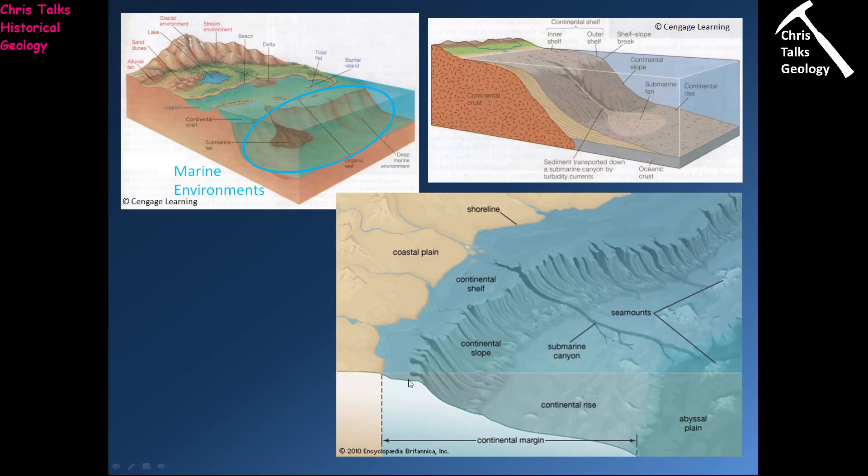When we come to the edge of the continental shelf, we have the shelf break, and then you go down the continental slope. The continental slope is essentially the edge of the continental crust. It can vary in angle — typically it's quite steep, anywhere between 40 and 90 degrees. Because it's quite a steep environment, material doesn't settle on the continental slope; it merely passes through it.